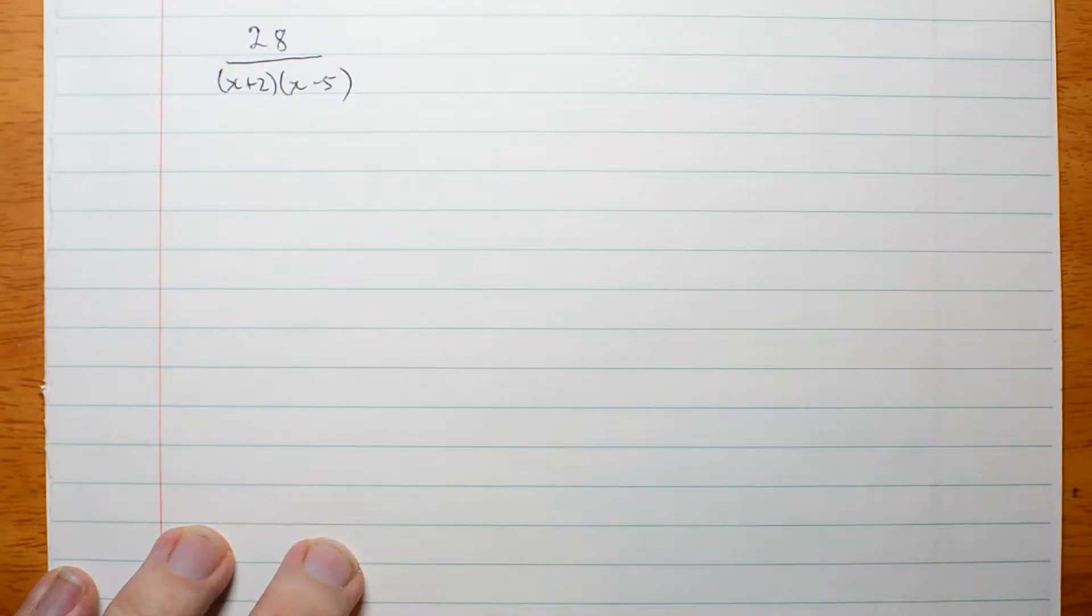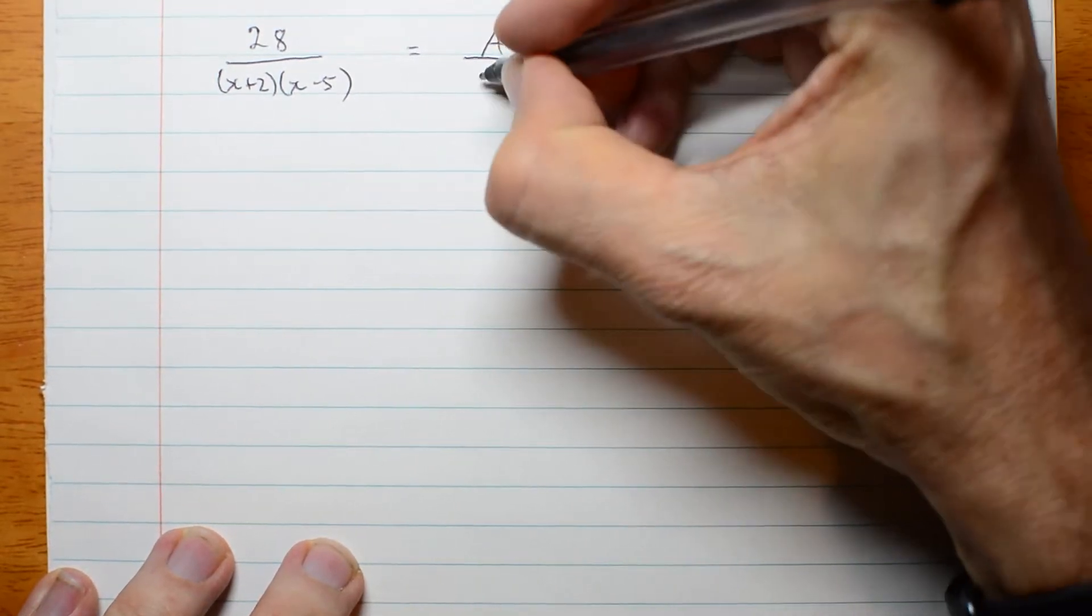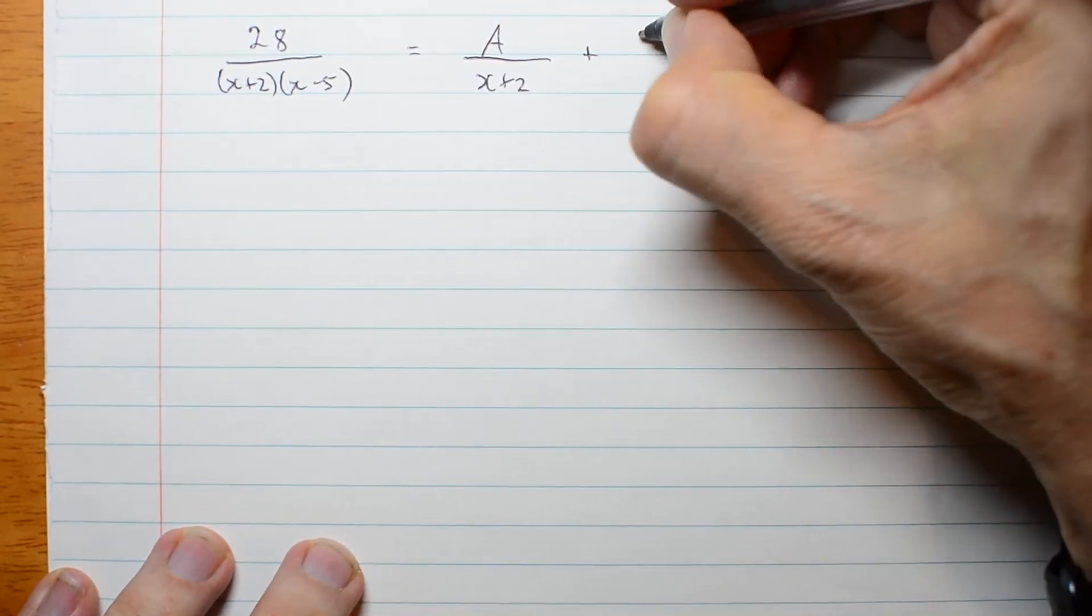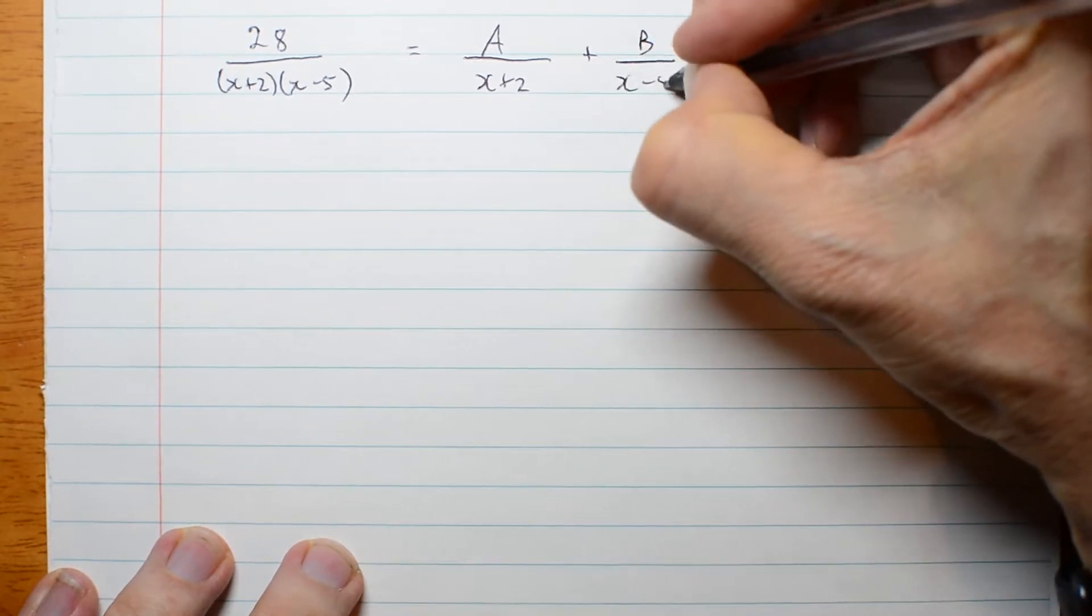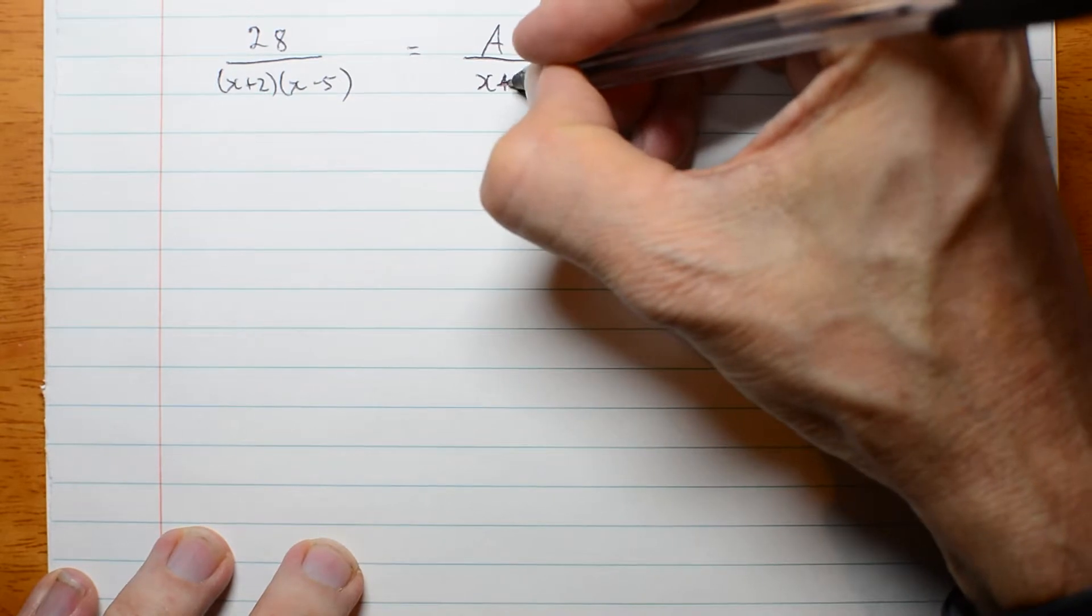So let's have a look at the other method of doing this. I want to write this expression as a over x plus 2 plus b over x minus 5. That was a particularly messy plus sign.